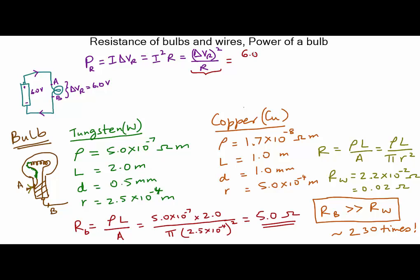This is 6.0 squared divided by 5.0 which gives me 7.2 watts. So this bulb puts out 7.2 joules of energy per second. And by the way if I was interested in figuring out the current through the bulb I can easily do that using Ohm's law. So the current through the bulb would be equal to the potential difference across the bulb divided by its resistance and so that is 6.0 divided by 5.0 which is 1.2 amps.